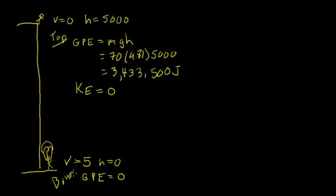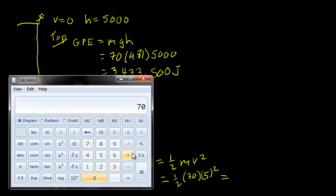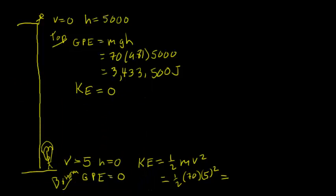we will calculate kinetic energy using one-half mv squared. In this case, we're going to have one-half times 70 times 5 squared. And we can use the calculator again. We see that the kinetic energy at the bottom is 875 joules.